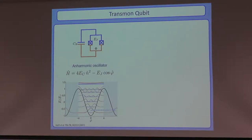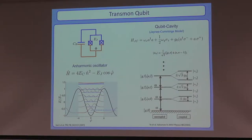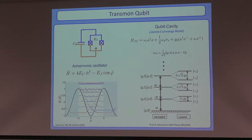You can fabricate a transmon inside a microwave resonator, giving a capacitive coupling that looks like dipole coupling of a traditional atom to a cavity, yielding this Jaynes-Cummings Hamiltonian: a harmonic oscillator for the cavity, a spin for the qubit, and a resonant dipole exchange interaction as the dominant coupling term. Looking at the energy levels, the cavity initially has a harmonic spectrum, but coupling to the qubit splits each harmonic level into a doublet, with the splitting depending on the number of photons in the cavity.